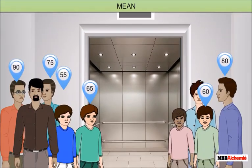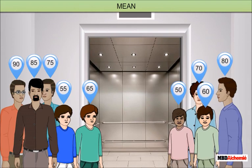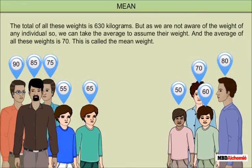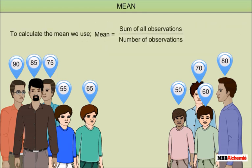What if the weight of all of them is different? Say 60, 80, 75, 65, 90, 55, 50, 85, and 70. The total of all these weights is 630 kilograms. But as we are not aware of the weight of any individual, we can take the average to assume their weight. The average of all these weights is 70. This is called the mean weight. To calculate the mean, we use the sum of all observations divided by the number of observations.